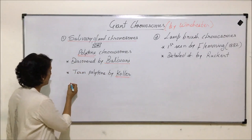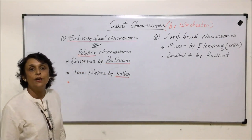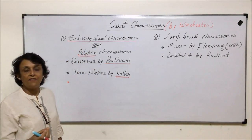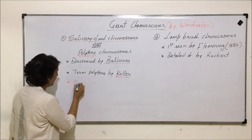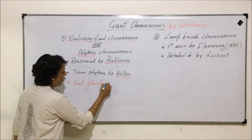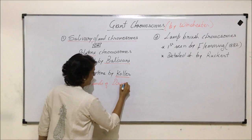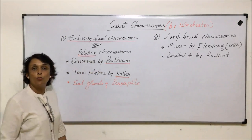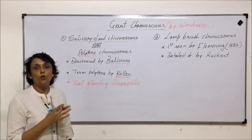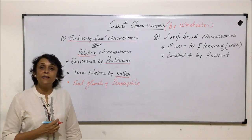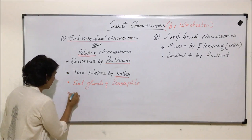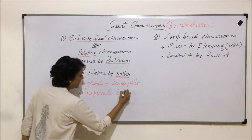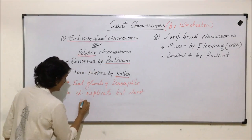Before discussing further, let us talk about where these were discovered. As the name tells us, salivary gland means they are discovered in the salivary gland of some organism. They were discovered in the salivary glands of Drosophila. The reason why they are known as polytene chromosomes is that here the chromosomes replicate but they do not get separated.